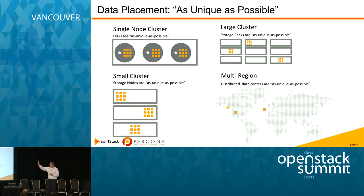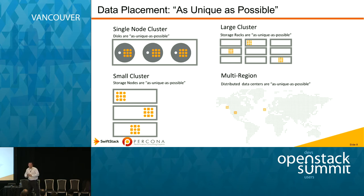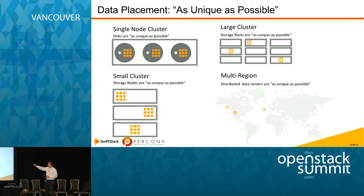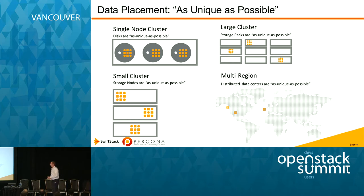We use an algorithm inside Swift and SwiftStack to spread data. You give us three drives and we'll spread data as uniquely as we can to emphasize availability. You give us a small cluster, a large cluster, or a multi-data-center, multi-region, or multi-continent cluster, and we'll make sure you have availability even if you lost a continent, had a network partition, or anything like that.